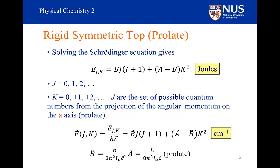The K quantum number comes from the projection of the angular momentum on the principal axis of the molecule — in this case along the A axis. We can justify this in a manner similar to before: quantum numbers come out of solving the Schrödinger equation whenever a boundary condition is applied. When we've got three rotational axes, we have three coordinates and three boundary conditions, giving us three quantum numbers: J, MJ, and K.